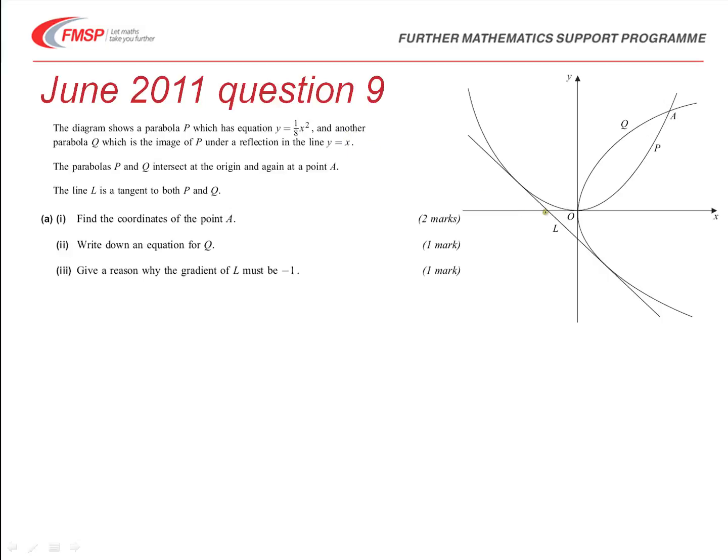Similarly, we are then told there is also a line L, which is a tangent to the curve P, which is also then a tangent to the curve Q. So, the first part of this problem asks us to find the equation of the point A. So we know that it lies on the line y equals x, and it lies on this curve y equals one-eighth of x squared. So, to find a point of intersection, we have to solve those simultaneously, which, in other words, in this case, tells us that x must equal one-eighth of x squared.